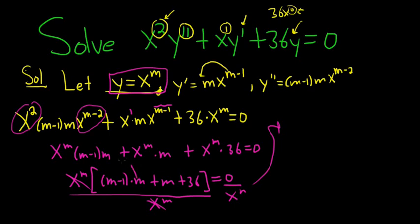So then we get, let's see, so m times m is m squared, m times negative 1 is negative m. We have a plus m, right, that's this one, and then we have the plus 36. All of this is equal to 0. Good stuff. These cancel, we get m squared plus 36 equals 0.